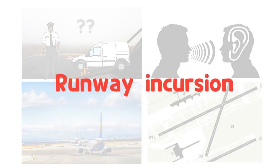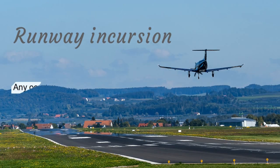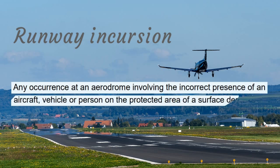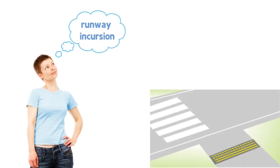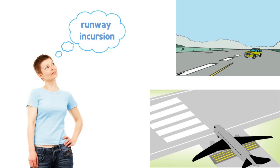It is runway incursion. Runway incursion is defined by ICAO and FAA as any occurrence at an aerodrome involving the incorrect presence of an aircraft, vehicle or person on the protected area of a surface designated for the landing and takeoff of aircraft. When it comes to runway incursion, people will simply think of an aircraft invading the hold line or a vehicle entering the runway without permission.